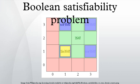If this is the case, the formula is called satisfiable. On the other hand, if no such assignment exists, the function expressed by the formula is identically false for all possible variable assignments and the formula is unsatisfiable.